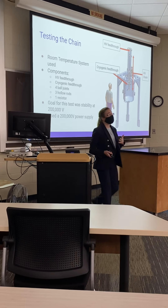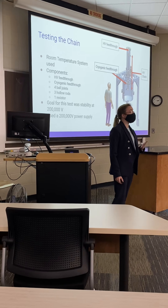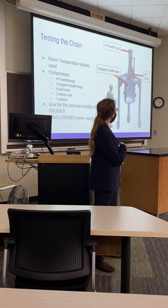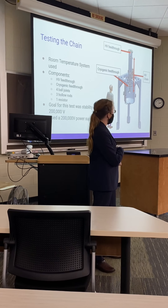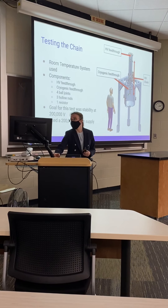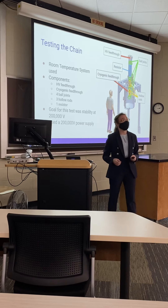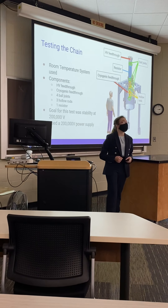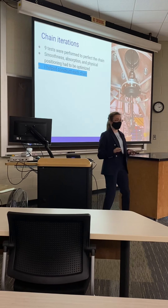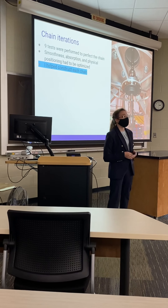Before we could do any of that testing, we wanted to make sure that the chain was able to function without cryogens, and we used the room temperature system for this. The configuration was very similar to the one in the half-scale system, with a high-voltage feed-through at the top, terminating at the terminating diode, and with one cryogenic feed-through in the center. This was configured with four ball joints, three hollow rods, and a resistor. The goal, just like the half-scale system, was to get up to 200,000 volts, and we used a 200,000 volt power supply to do so.